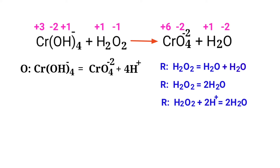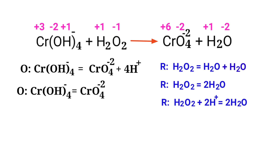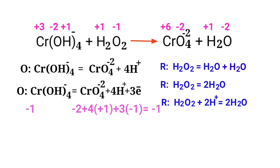For a redox reaction, the addition of charges should be equal on both sides. Check the oxidation half reaction — both sides are not equal. To make them equal, you should add electrons. Adding 3 protons to the left side to make it equal to plus 2 is wrong. Instead, add 3 electrons to the right side to make it equal to minus 1. Now the charges are equaled in the oxidation half reaction.